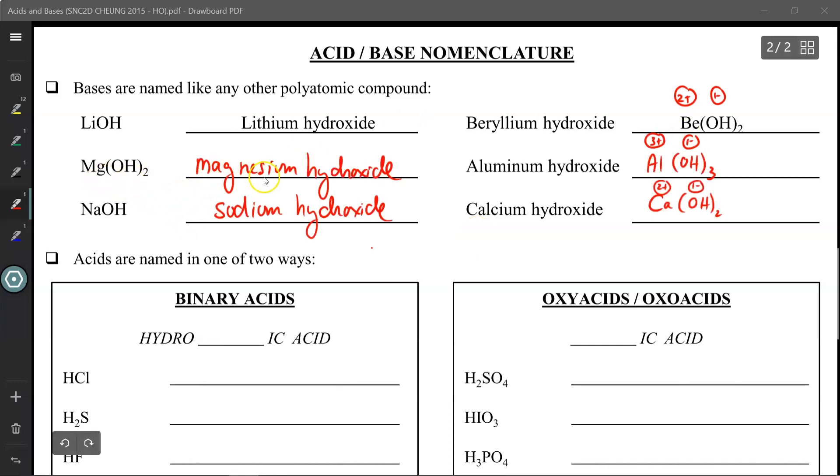Alright, so Mg(OH)2 is magnesium hydroxide. NaOH is sodium hydroxide. Aluminum hydroxide - remember that aluminum has a 3 plus valence charge, so when you zero-sum, I need three of these hydroxides. Don't forget to keep the brackets because we're referring to three hydroxides and not just three hydrogens. Finally, calcium hydroxide. Calcium is a 2 plus charge, so when I zero-sum, I need two of these hydroxides for this to zero-sum properly.